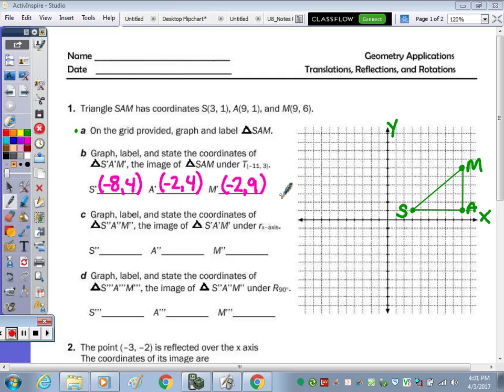All right, in today's warm-up we're going to review some of the transformations that we've done so far. So I already have on the grid triangle SAM, and I asked that the sub give you the coordinates for B because we're learning that today, and we needed the coordinates of B in order to do C, because it said to graph, label.